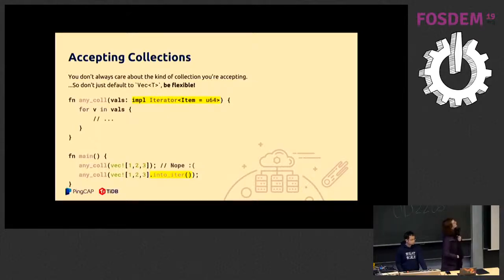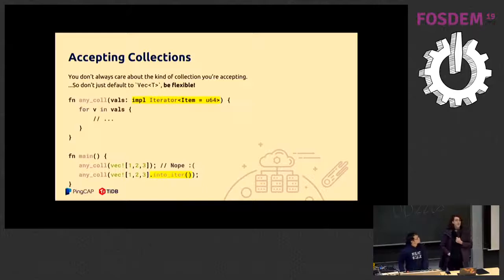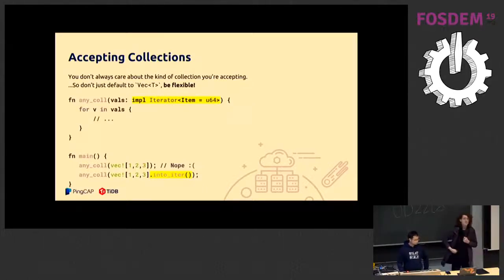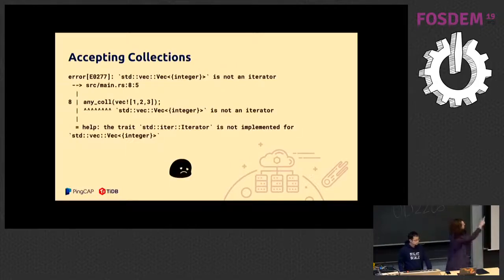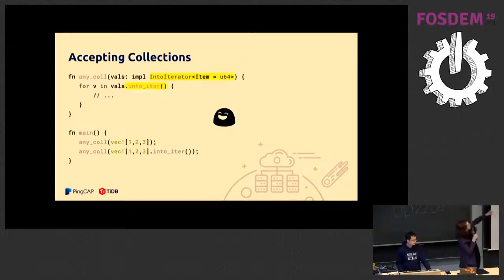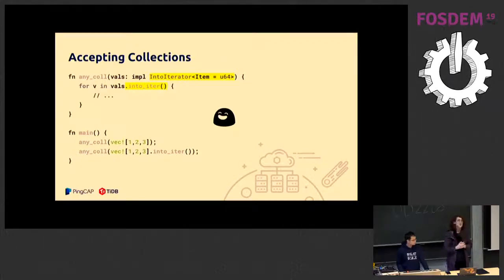Similarly with collections: your first attempt might be to accept an iterator, then you try to pass a Vec and realize it doesn't work. The proper way is to use IntoIterator — now you can pass a vector or an iterator, because iterators implement IntoIterator.